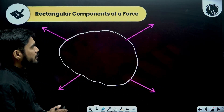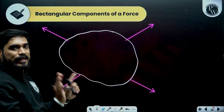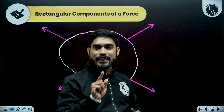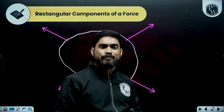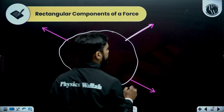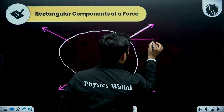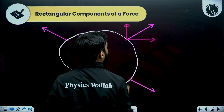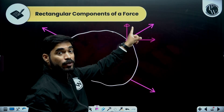In order to solve this problem, we will first bring these forces into the same direction by resolving them into their components. Resolving a force means breaking a force. We will be breaking each force into two components: the first component will be the x-component of the force, and the second component will be the y-component. These components are known as rectangular components.